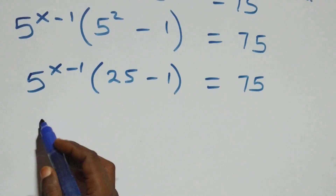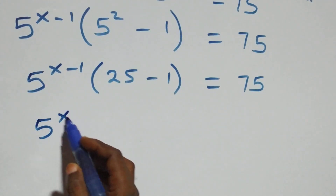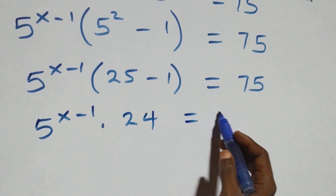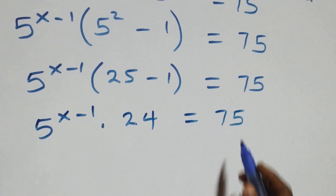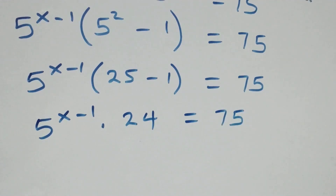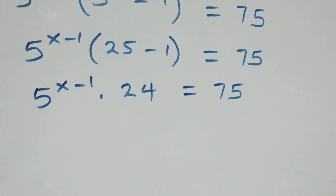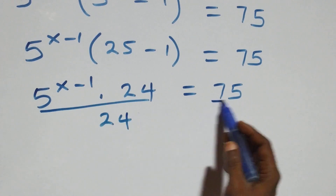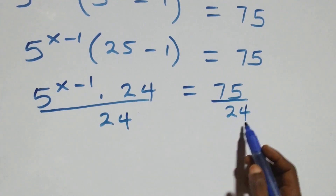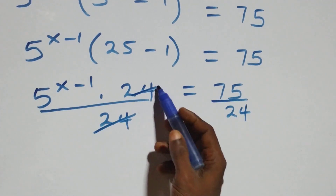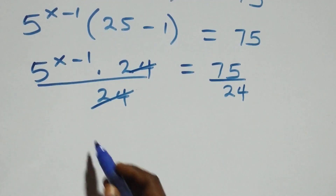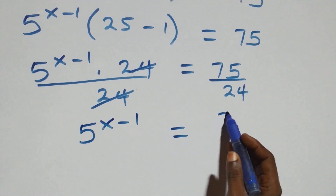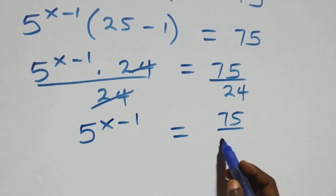This becomes 5 raised to the power x minus one times 24 equals 75. Dividing both sides by 24, the 24s cancel, leaving 5 raised to the power x minus one equals 75 over 24.